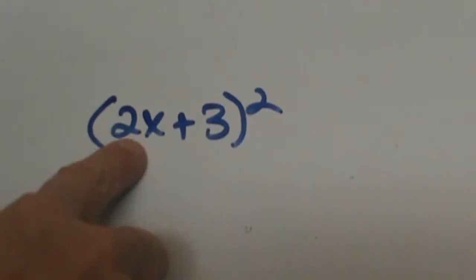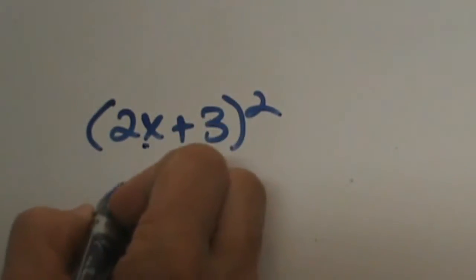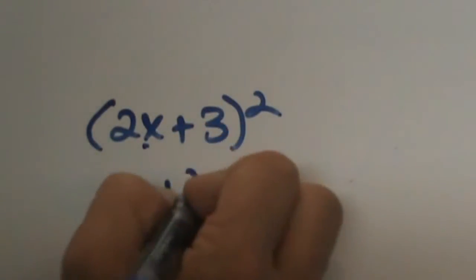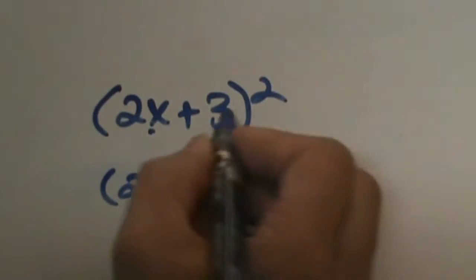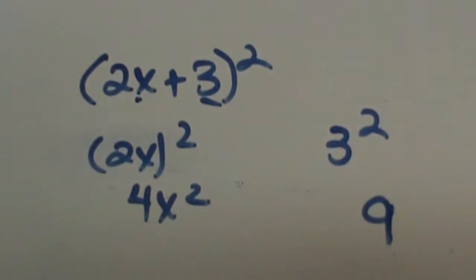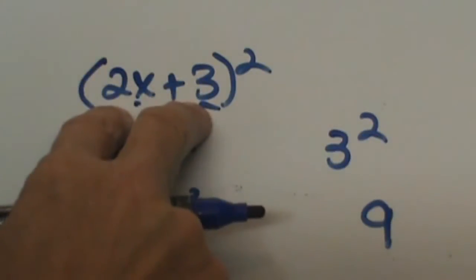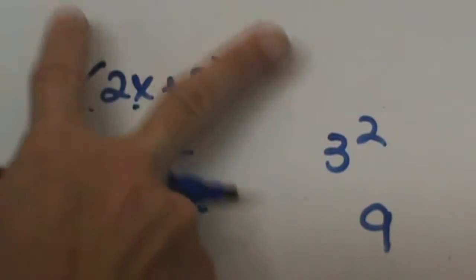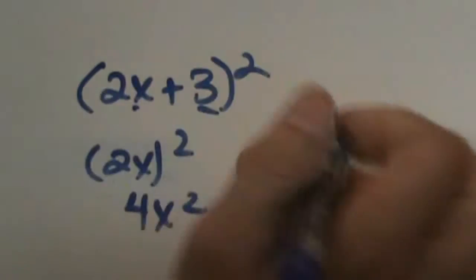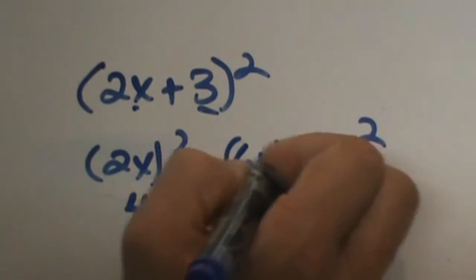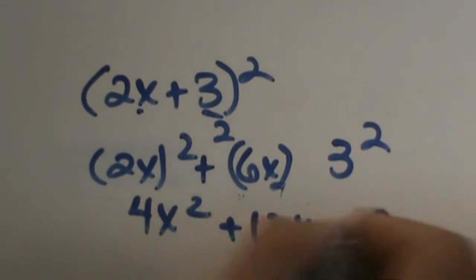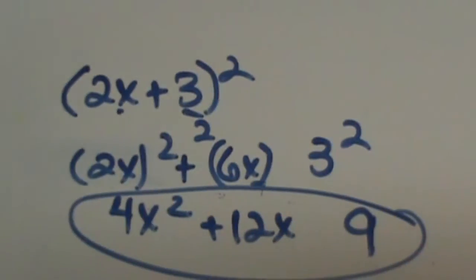The first term squared would be 4x squared. The last term squared is 9. To get the middle term, we multiply these two together and then double it, because of the outer and inner concept. So 2x times 3 gives us 6x, and we double that to get 12x. That is the product — a neat little pattern.